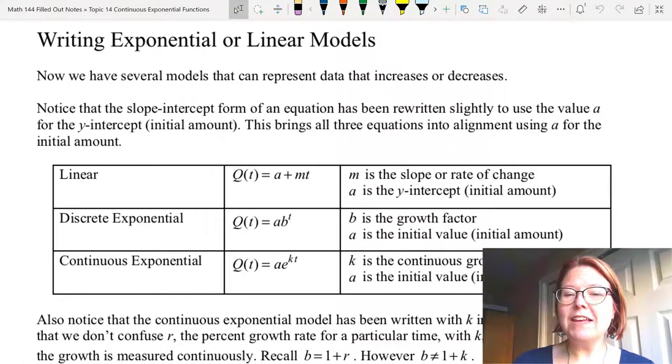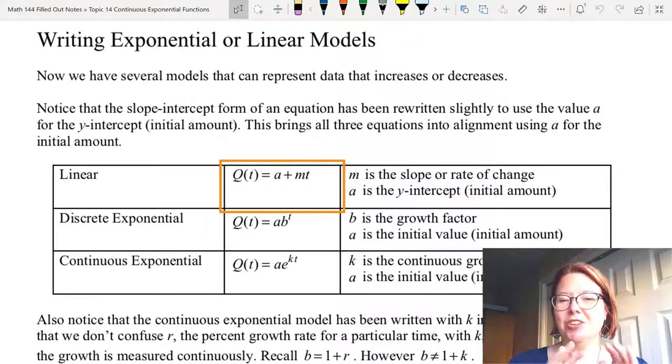So I'm switching y equals mx plus b to Q(t) equals a plus mt. That's a is the initial value plus m is the slope and t is the variable.